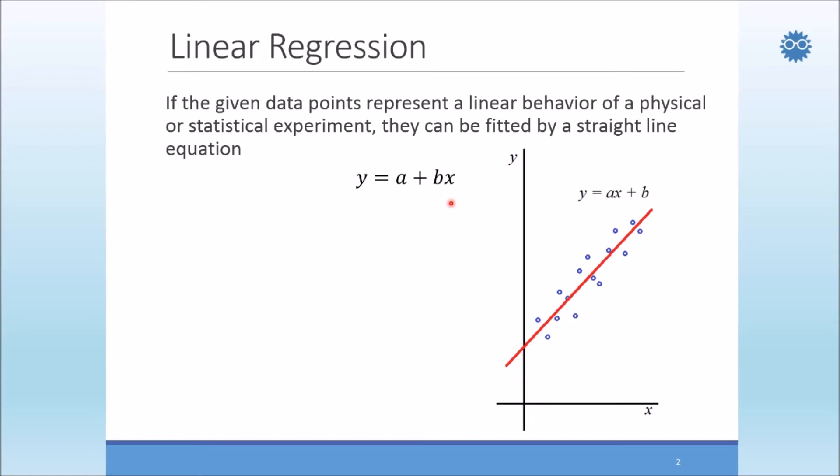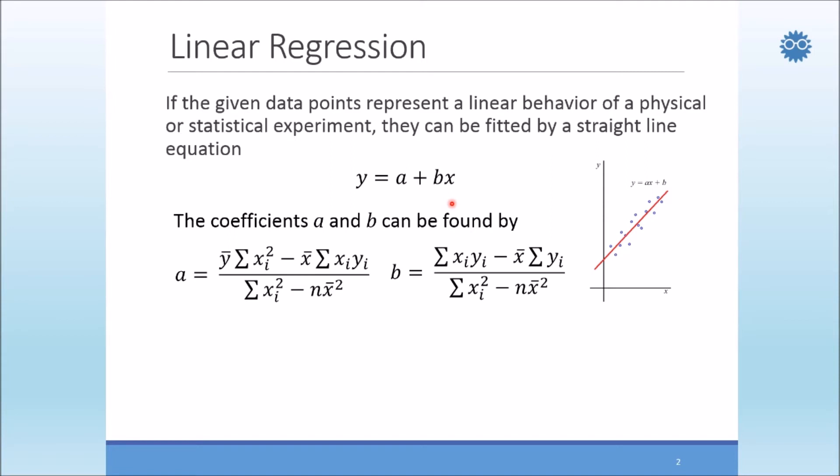Now, the idea here is to find the coefficients a and b. We have two equations or formulae to use the least squares method. We have squares of x here and multiplication of xi and yi, and also the square of mean value of x here. These two formulas are based on the least squares method.